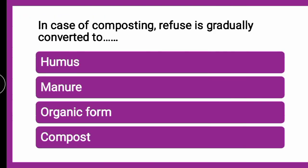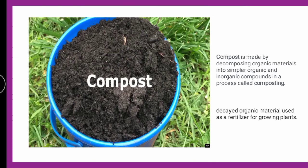The next question: In case of composting, the refuse is gradually converted to — humus, manure, organic form, or compost? The correct answer is compost, since the method is composting. Compost is made from decomposing organic materials into simpler organic forms and inorganic compounds in the process called composting. This decayed organic material can be used as a fertilizer for growing plants.